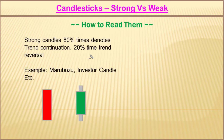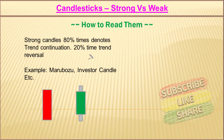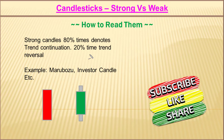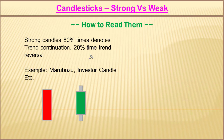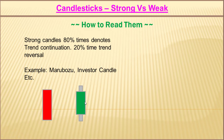Now let's see how we can read them on the chart. A strong candlestick 80% of the time denotes trend continuation and 20% of the time denotes trend reversal. So if you see a strong candlestick on the chart, you may assume 80% of the time the trend will continue further. Some examples of strong candlesticks are Marubozu and the investor candle — these large-body candles denote 80% trend continuation and 20% trend reversal.